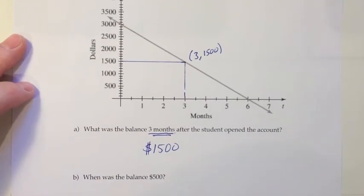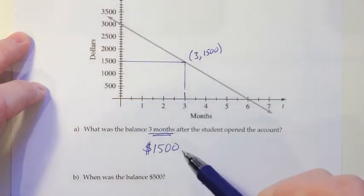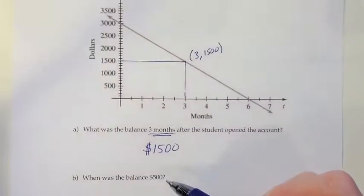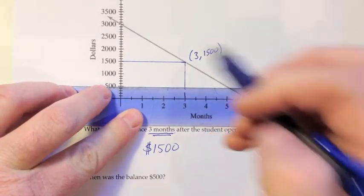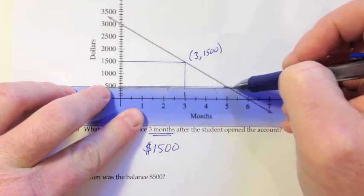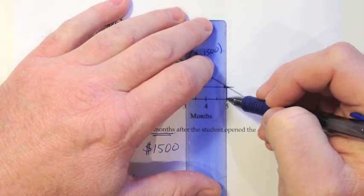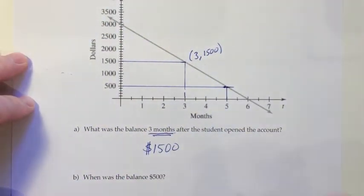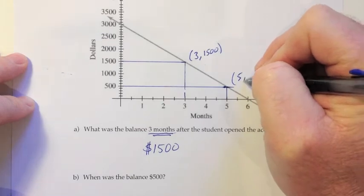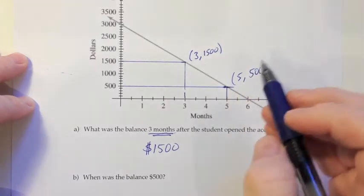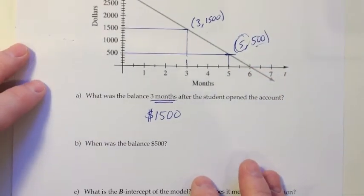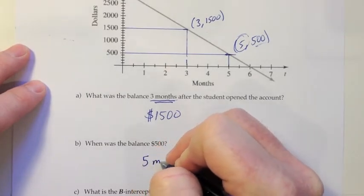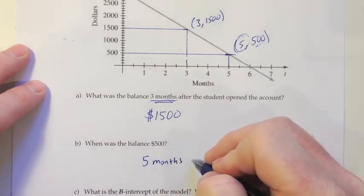Then moving on to the second question. When was the balance $500? So this time, since they're giving us something on the vertical, they're giving us the y-coordinate. We'll start off with the $500. We'll draw across from there until we hit the graph. And then from there draw it down. And it looks like that would be after five months. So we could write an ordered pair there if we wanted. It's five months, and it's $500. They gave us the $500 part, so the answer to the question for us would be that five. So when was the balance $500? That would be five months after the student opened the account.